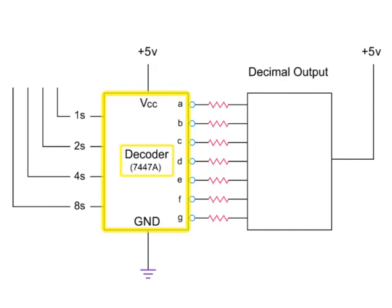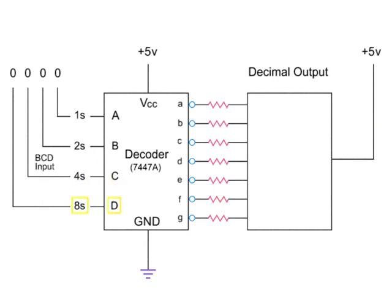A seven-segment decoder has four binary coded decimal, or BCD, inputs. The inputs are represented here by A in the ones place, B in the twos place, C in the fours place, and D in the eights place.